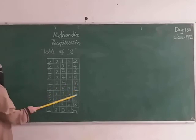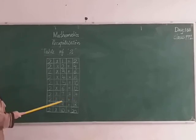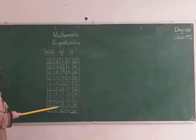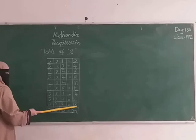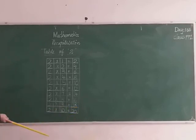Two sevens are fourteen. Two eights are sixteen. Two nines are eighteen. Two tens are twenty.